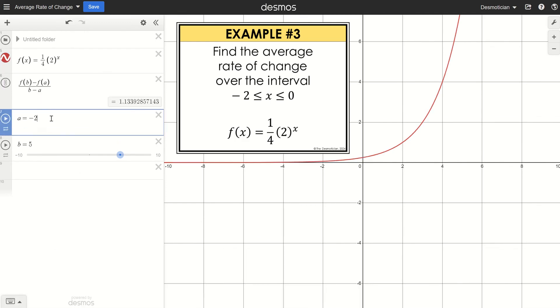Alright, let me change my endpoints, so -2 and 0. And I see that this is a really ugly decimal, but you'll notice that a fraction button appears over here on the left side. And I can click that and there is my average rate of change, 3 over 32, or 3/32.